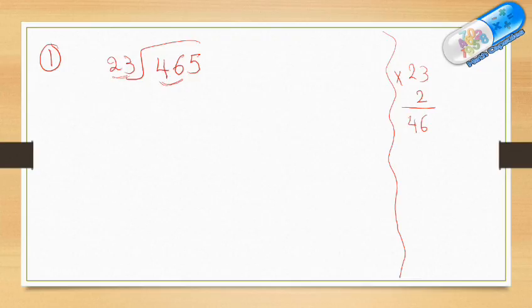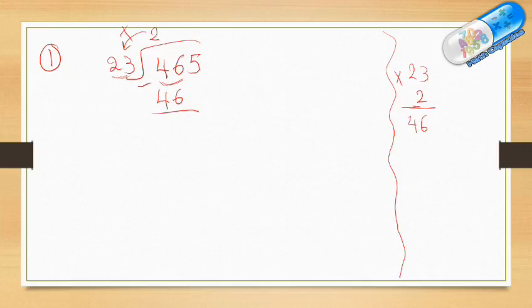It's exactly 46, so I'll take 2 here. 2 times 23 is 46, and 46 minus 46 is 0. Now get down the 5.